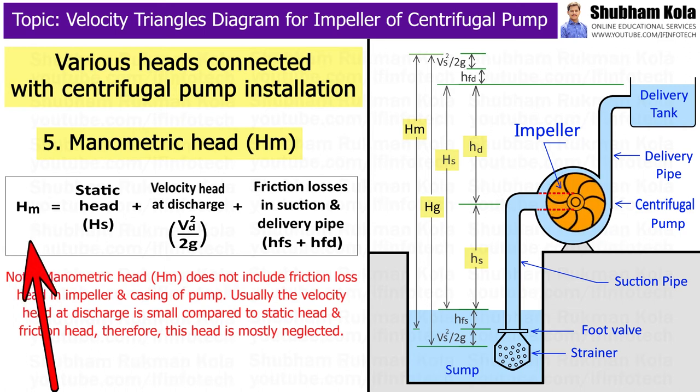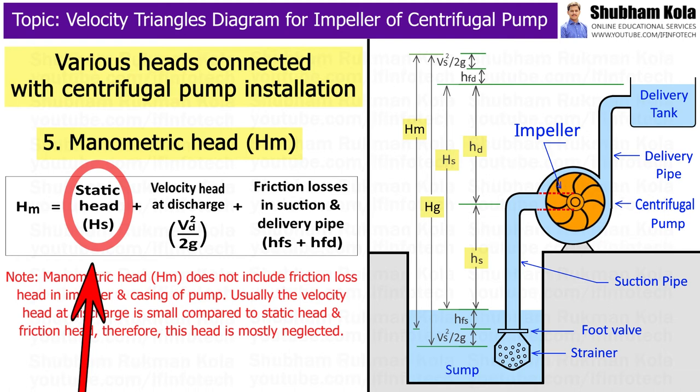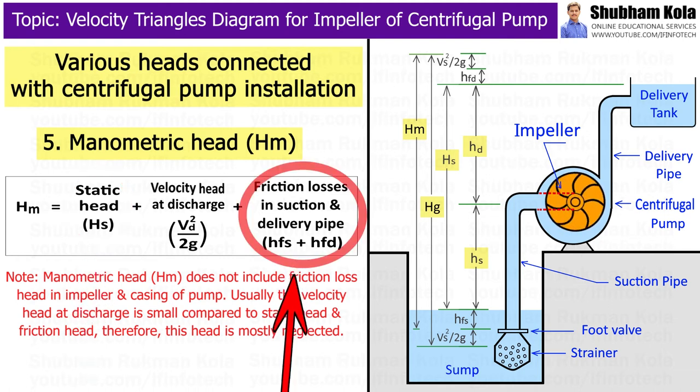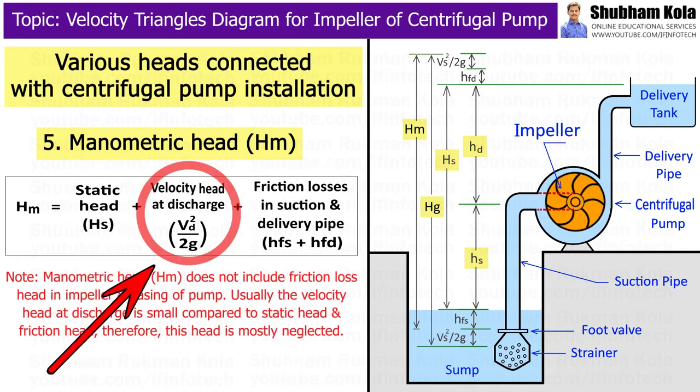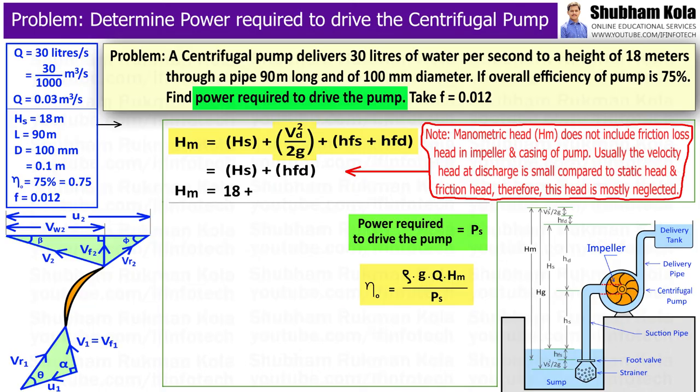And usually, the velocity head at discharge is small compared to static head and friction head. Therefore, this head is mostly neglected. Yes, static head is given as 18 metres.